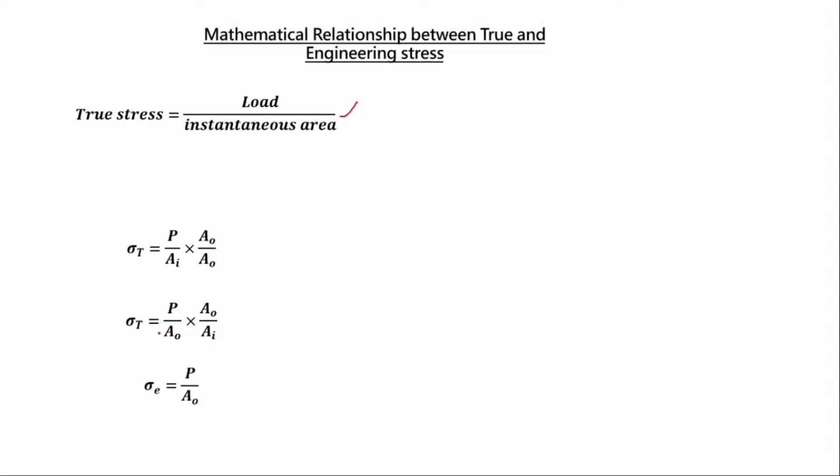The load over the original cross-sectional area is the engineering stress. We are trying to prove the mathematical relationship between the true and the engineering stress. Substituting, we know that the true stress is equal to the engineering stress times the original area over the instantaneous cross-sectional area (σ_true = σ_engineering × A₀/A_i).